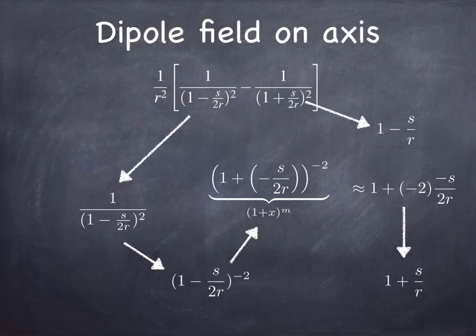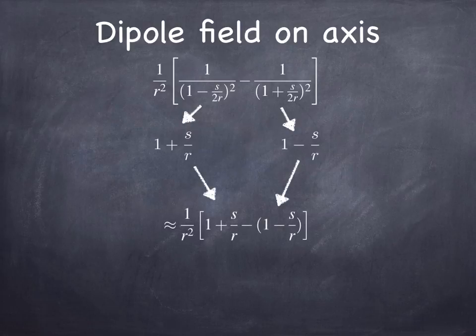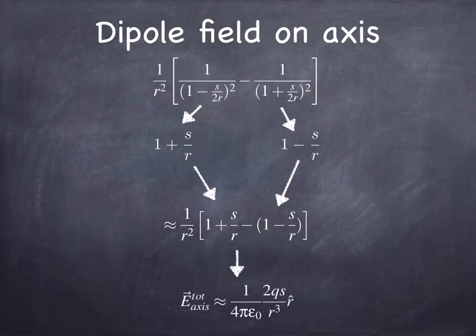Notice that when you had 1 minus s over 2r squared in the denominator, it becomes 1 plus s over r in the numerator. And 1 plus s over 2r squared in the denominator is 1 minus s over r when it makes its way to the numerator. And so we can put that back into this expression. And we see that the 1s cancel and the s over rs get doubled because they come in with the same sign in the end. And so we get 2s over r cubed. And then putting everything else back in, we get the final expression.